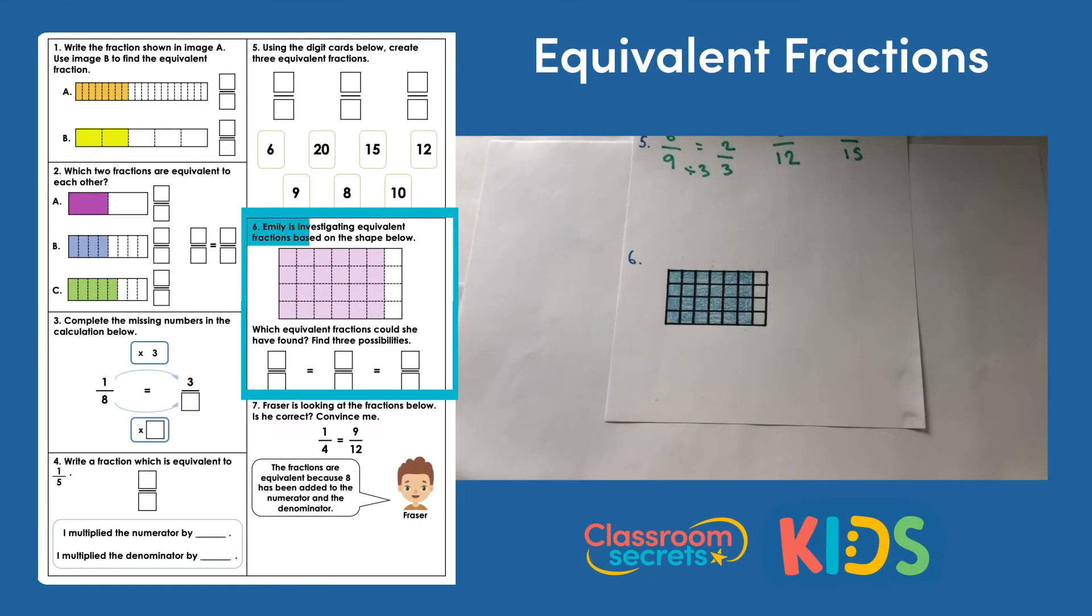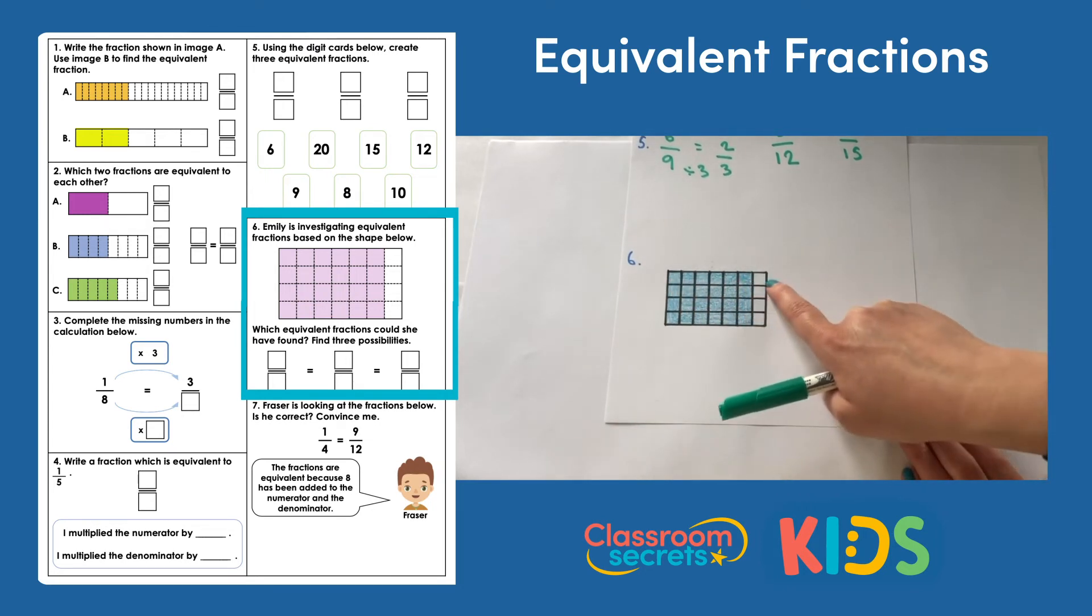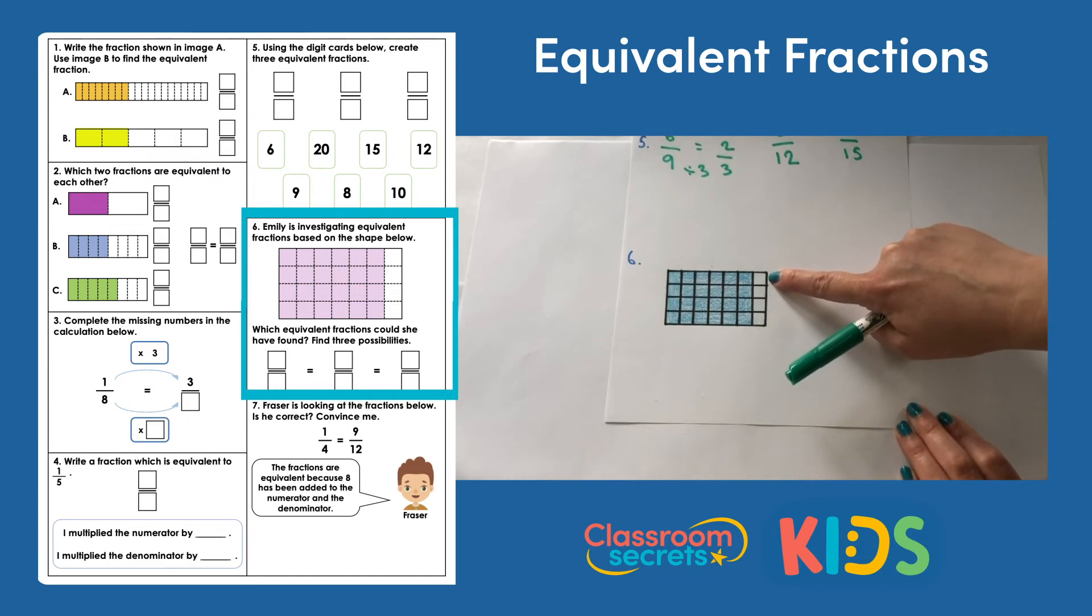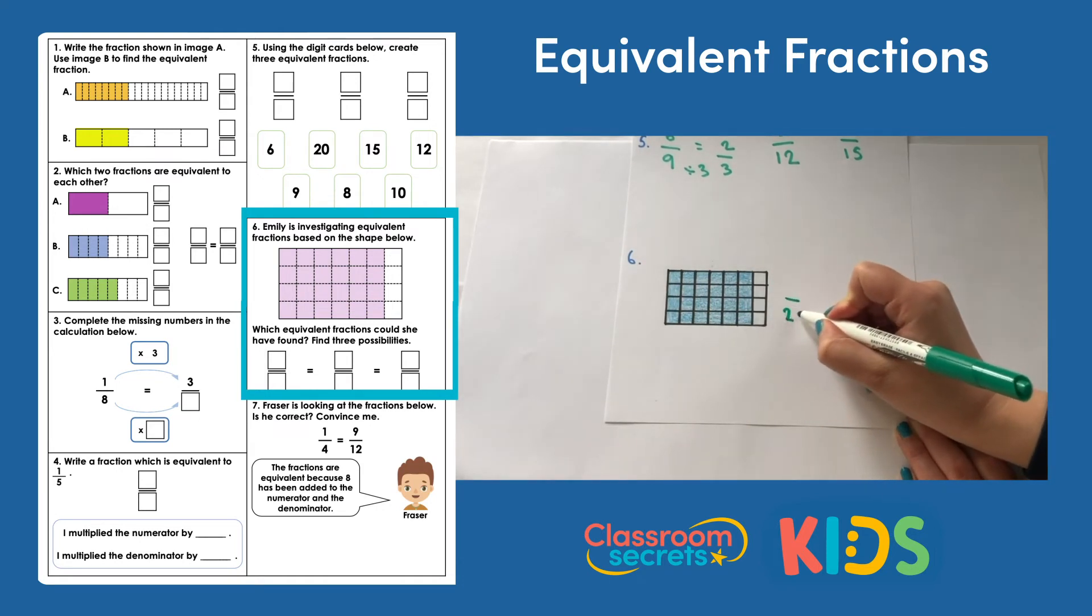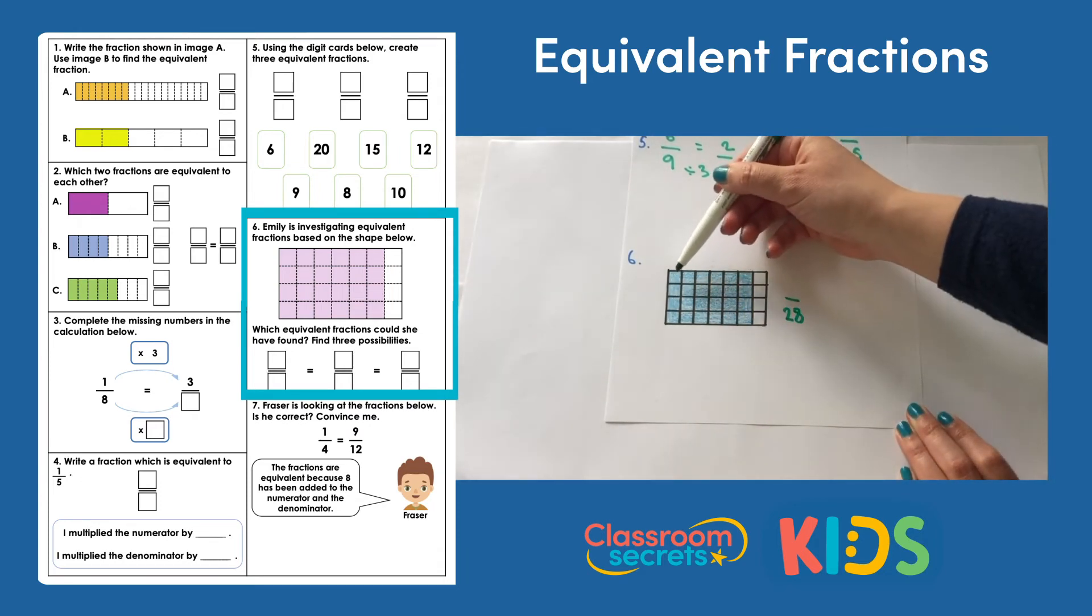Question 6. Emily is investigating equivalent fractions based on the shape below. Which equivalent fractions could she have found? Find 3 possibilities. Again, there are so many different options for this question. I've drawn out the shape again here so we can have a look at this shape together.